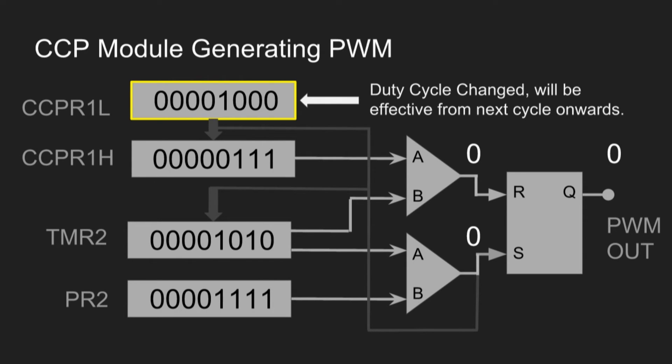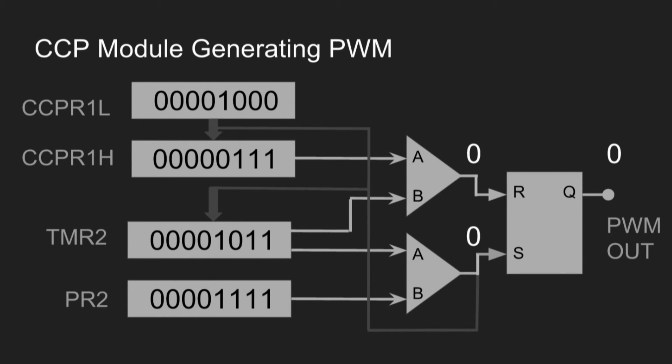Here we change the duty cycle during this process, but it will come effective only during next cycle as it is to be get latched to CCPR1H register. This will avoid glitches in the PWM output.